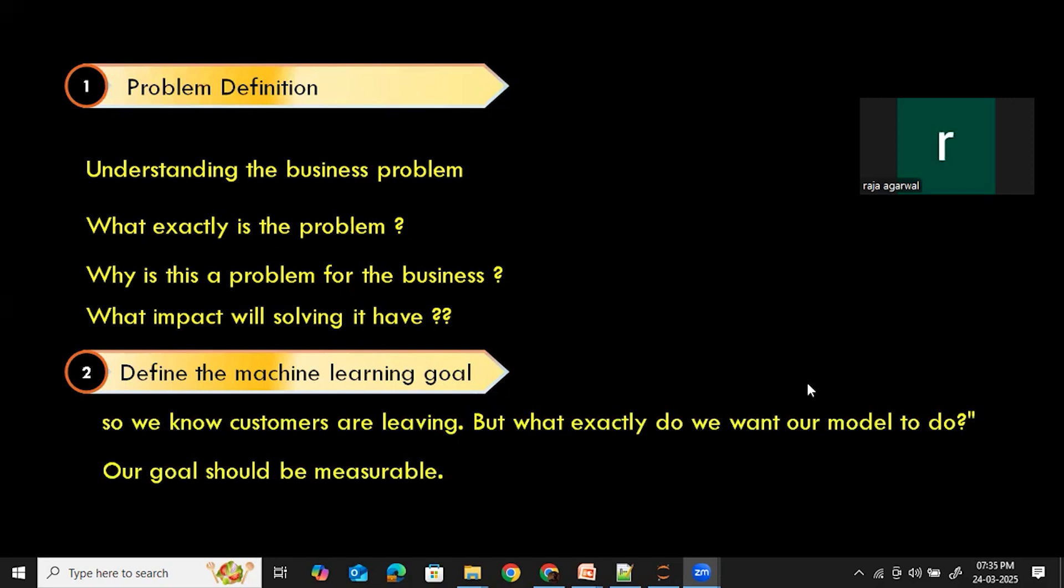So classification problem, probably along with the classification problem, we can also create a recommendation system which can suggest products to retain customers. The key takeaway here is our goal should be measurable. Instead of saying I want to improve customer retention, we should say I want to build a model that can predict customer churn with 85% accuracy. This will help track the success. So once you build and deploy your model, before deploying it, you need to measure how well your model predicts the customer churn and whether your model predicts the customer churn with 85% or 90% accuracy, then your goal has been met. So you need to set the goal very clearly. Your goal should be measurable.